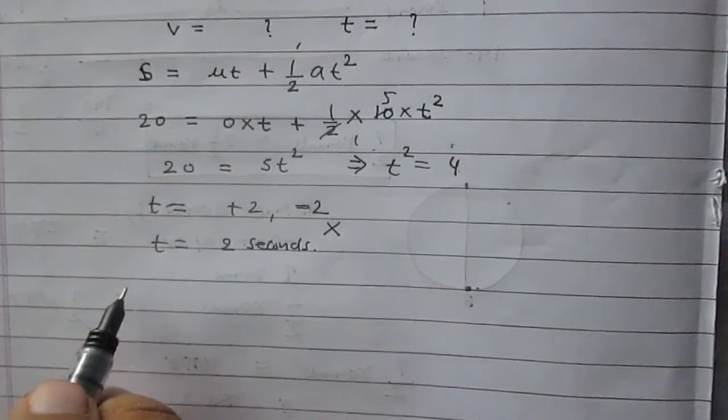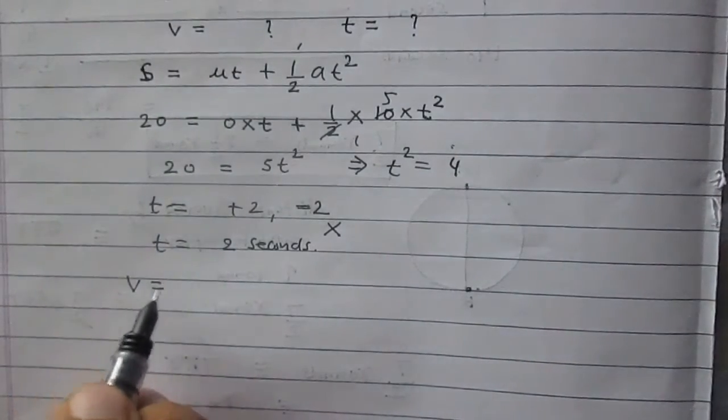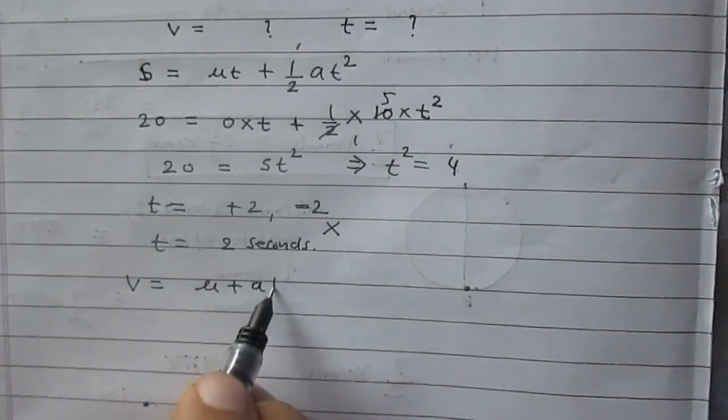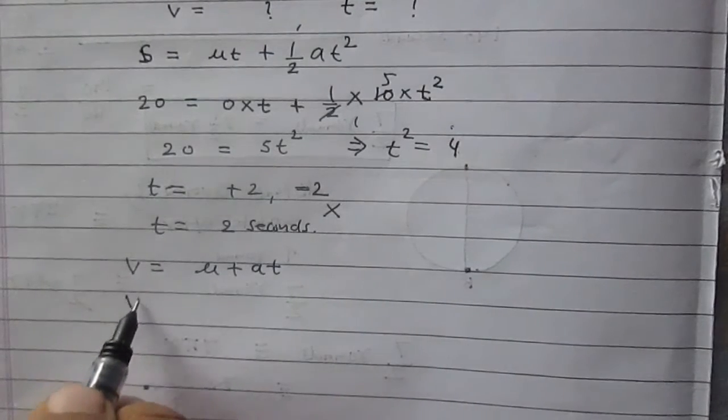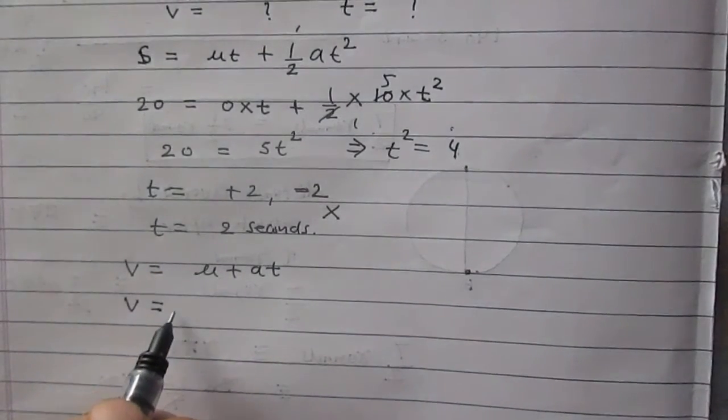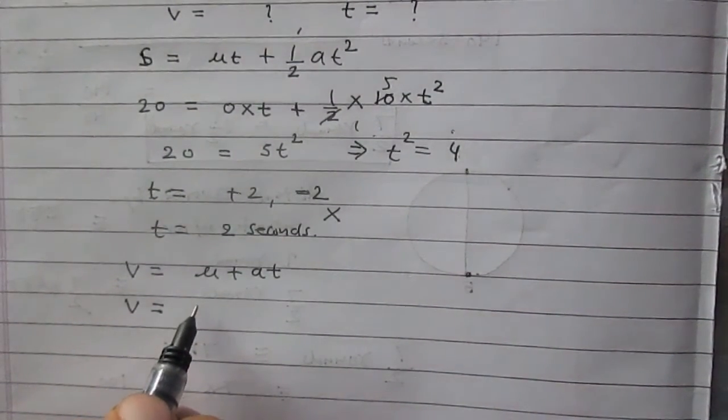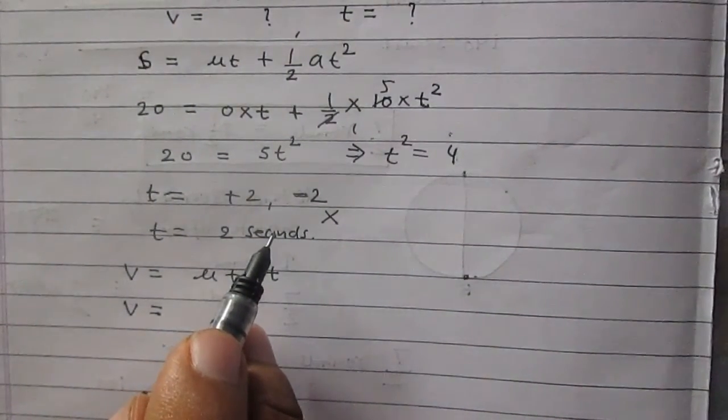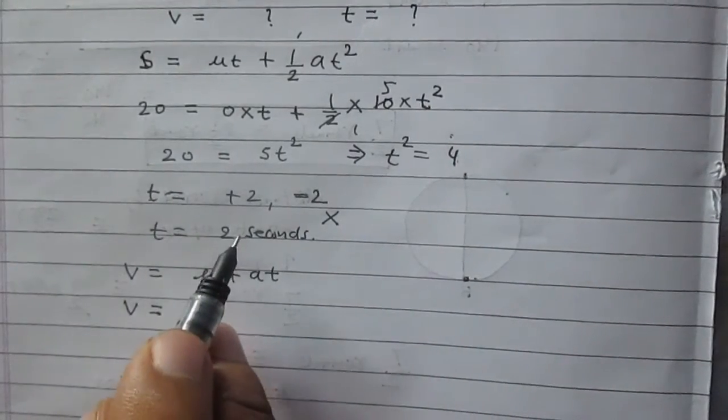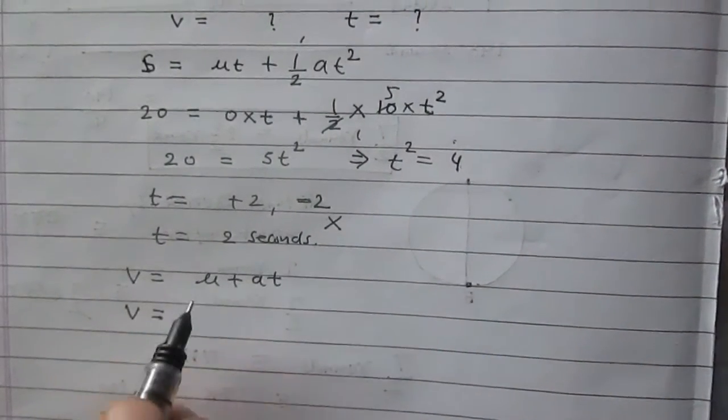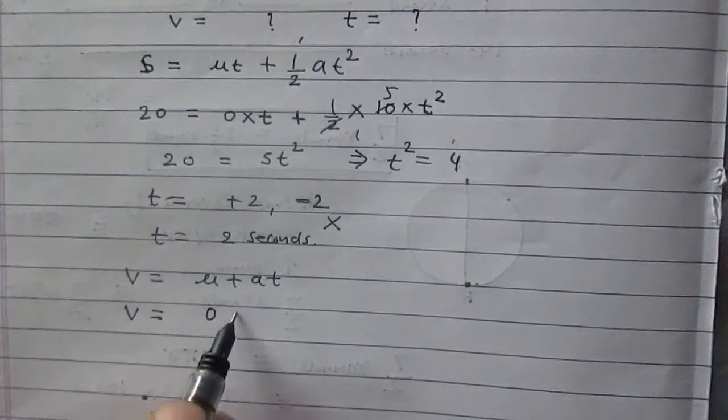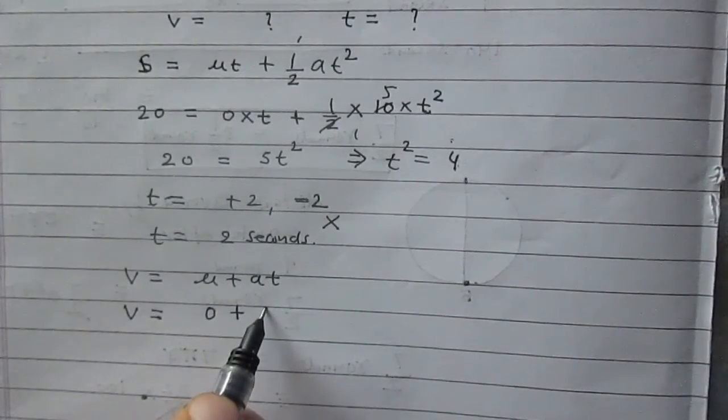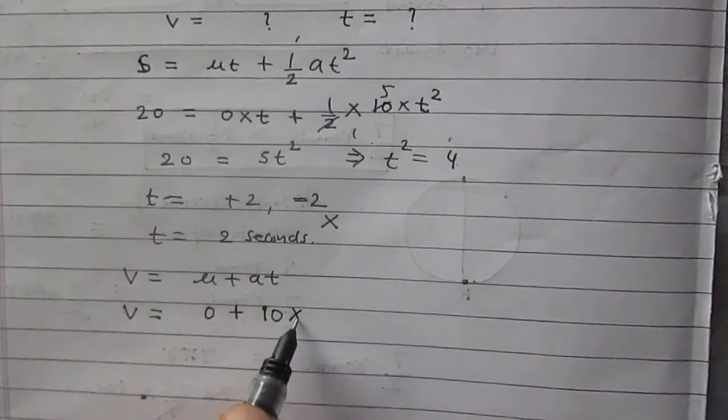Now consider another equation, which is v equals u plus at. v is the final velocity of the ball just before it touches the ground, or the final velocity after 2 seconds because the ball will touch the ground after 2 seconds. So v is u, which is 0, plus a into t. Acceleration is 10, time t is 2.